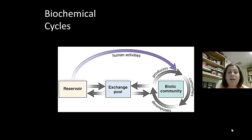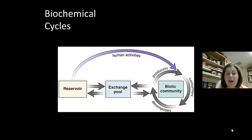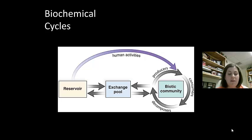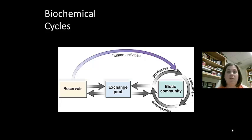Biogeochemical cycles involve the cycling of chemicals between abiotic and biotic communities. The chemicals begin in a reservoir but are made available to the biotic community by way of an exchange pool. This exchange pool may have certain organisms that allow producers to access them. Then it goes into the biotic community — the producers, consumers, and decomposers. There are several cycles discussed in your book: the hydraulic cycle, which is the water cycle, the phosphorus cycle, the nitrogen cycle, and the carbon cycle.